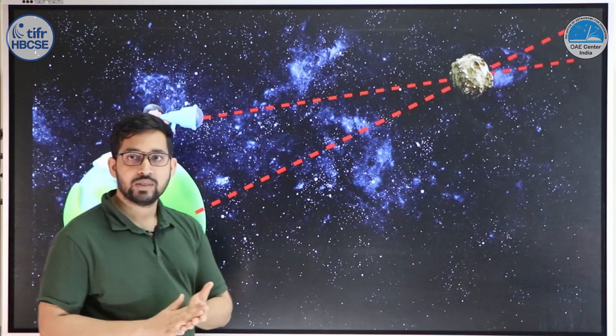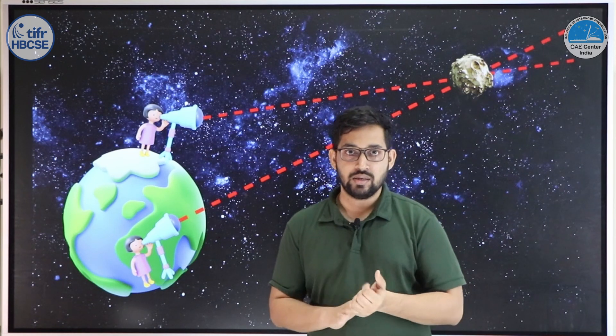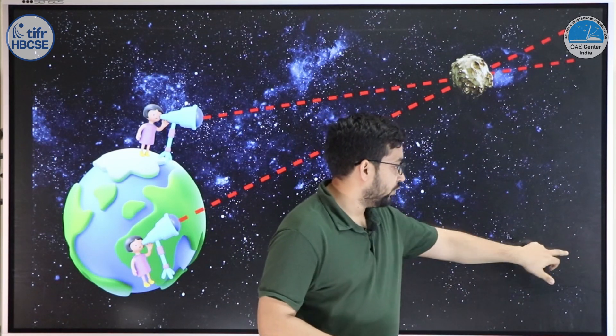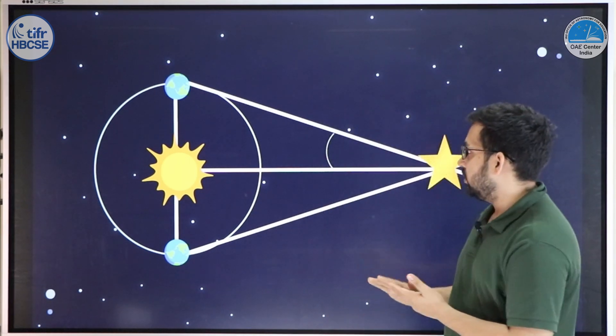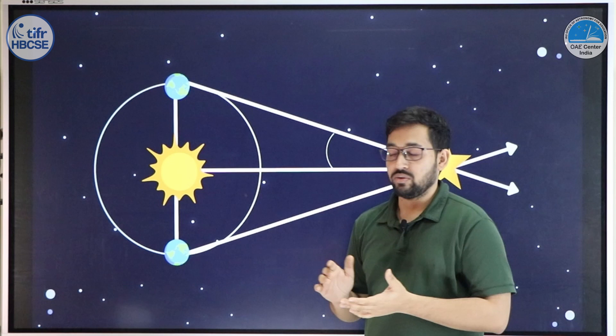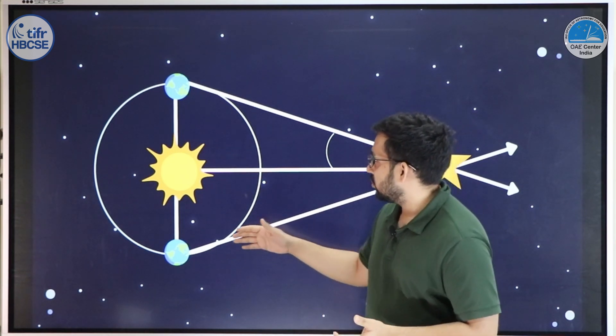Now, question for you is: what is the maximum distance these two observers can have to measure a parallax? One obvious answer would be the diameter of Earth. But if you think about it, it will be the diametrically opposite position in the orbit of Earth around the Sun. We are assuming it to be roughly circular, so we know...